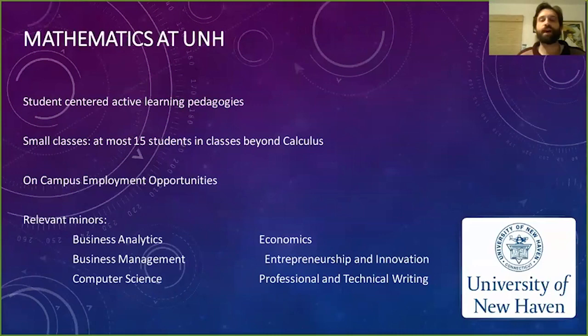Switching to mathematics at the University of New Haven — we're very student-centric and we have quite small classes. Beyond calculus, the math classes never have more than 15 students, which is really fantastic, because this allows you a chance to get to know the faculty and also get to know your peers.